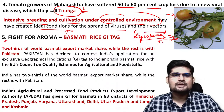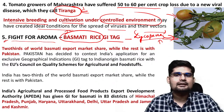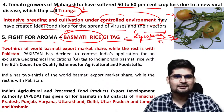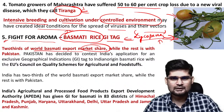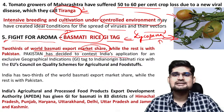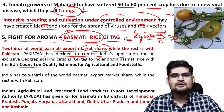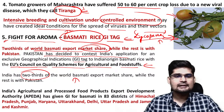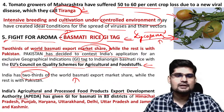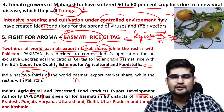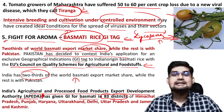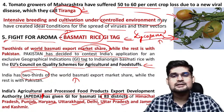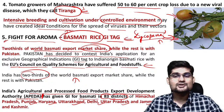The fifth topic is the fight for the aroma of basmati rice and its GI tag. Pakistan has challenged India's claim that basmati rice is Indian. India controls two-thirds of world basmati exports, with Pakistan holding the rest. Pakistan contested this in the EU's Council on Quality Schemes for Agricultural and Food Products. The Agricultural and Processed Food Products Export Development Authority, APEDA, has given the GI tag for basmati covering 83 districts across the states of Himachal Pradesh, Punjab, Haryana, Uttarakhand, Delhi, Uttar Pradesh, and Jammu & Kashmir.